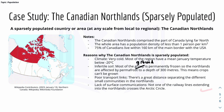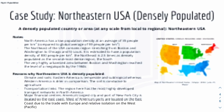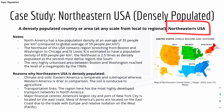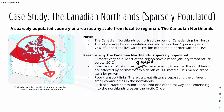None of the railway lines extending into the Northlands cross the Arctic Circle. This means the Canadian Northlands have many push factors that drive people out of the area, pulling them toward places like the Northeastern USA or, for internal migration within Canada, toward the southern border region — where, as we noted, the majority of Canadians actually live.